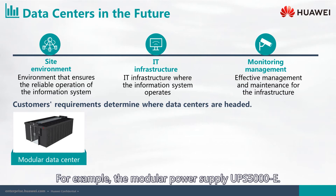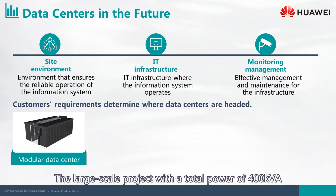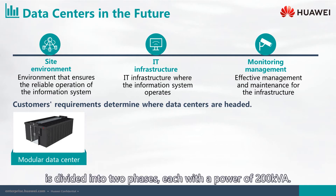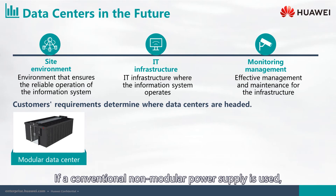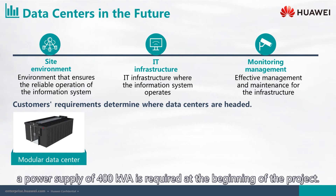For example, the modular power supply UPS 5000E — a large-scale project with a total power of 400 kilovolt-amperes — is divided into two phases, each with a power of 200 kilovolt-amperes. If a conventional non-modular power supply is used, a power supply of 400 kilovolt-amperes is required at the beginning of the project.